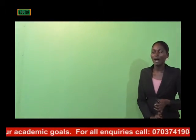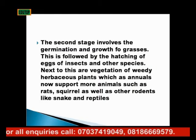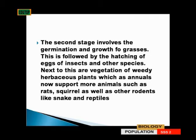The second stage in the abandoned farmland — the ecology of secondary succession — involves germination and growth of grasses. Those seeds and seeds of crops that could still survive begin to germinate. The larvae and eggs of insects begin to metamorphose and hatch into insects. Next to this is the vegetation of weedy herbaceous plants, which now support more animals such as rats, squirrels, as well as other rodents, snakes and reptiles.